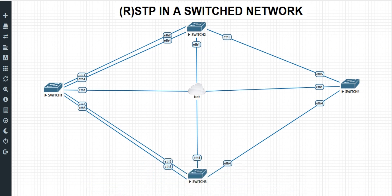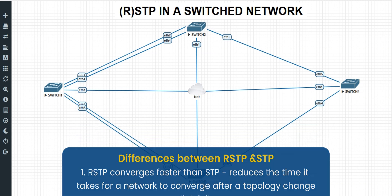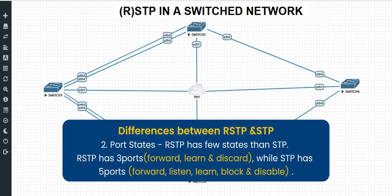Two major differences between STP and RSTP: RSTP converges faster than STP. In other words, if you have a disconnection or a network failure, the number of seconds it will take RSTP to bring back your network automatically is shorter when compared to that of the traditional STP. Also, the port states of RSTP are fewer when compared to STP.